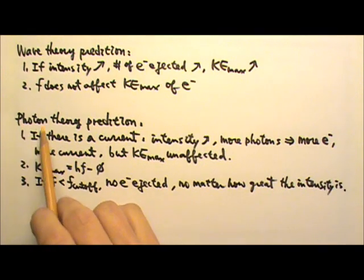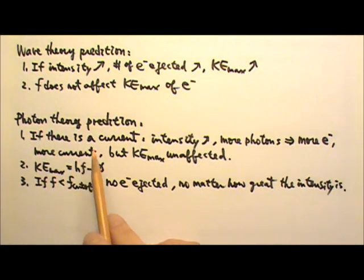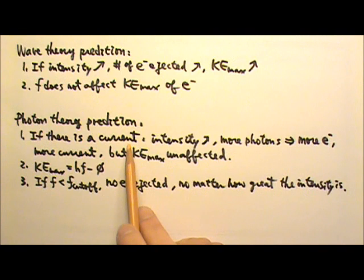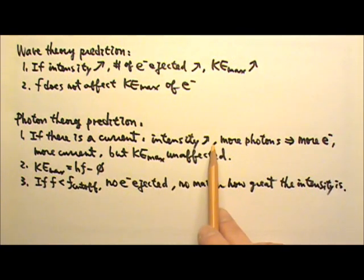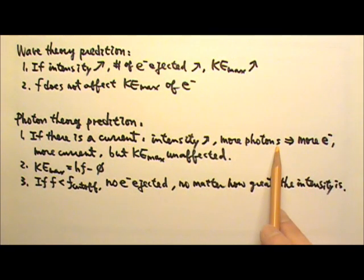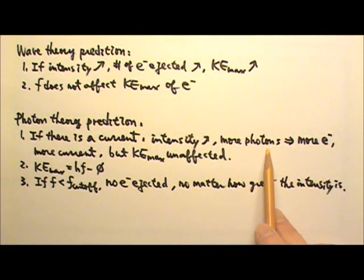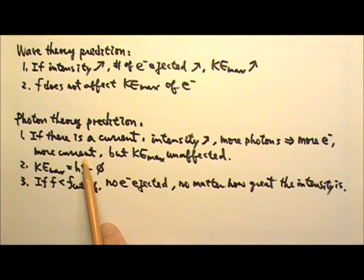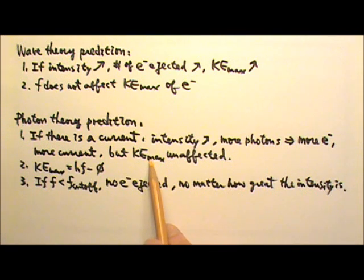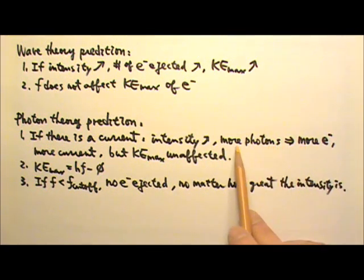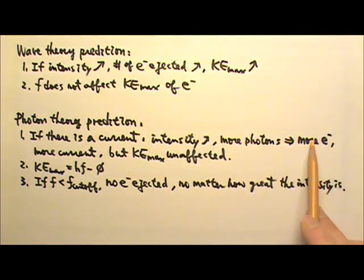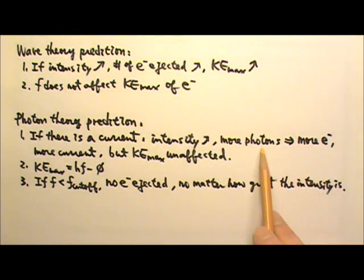But if light were made of photons, that means if there is a current, then higher intensity means more photons are coming in, therefore more electrons can catch photons and get freed to produce more current. But for each photon, it only provides HF that much energy. When there's more photons coming in, more electrons can catch photons, but one electron can only catch one single photon.